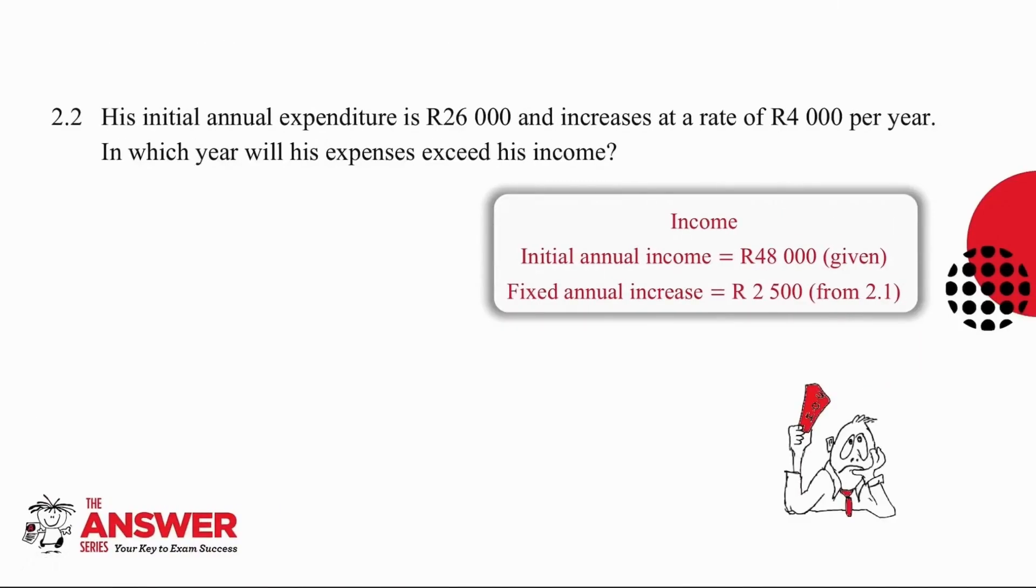In question 2.2, his initial annual expenditure is 26,000 rand and this increases at a rate of 4,000 rand per year. The question we have to answer is in which year would his expenses exceed his income? This is quite challenging but bear in mind that you know his initial income to be 48,000 rand and from question 2.1 we know the fixed annual increase is 2,500 rand. Pause the video and try the question and then we'll go through it together.